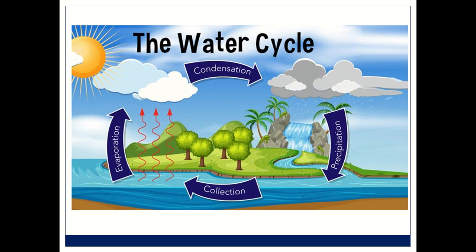This rainwater reaches the ponds, rivers, seas, lakes, etc., and the same process of evaporation and condensation continues. This whole process is called the water cycle.